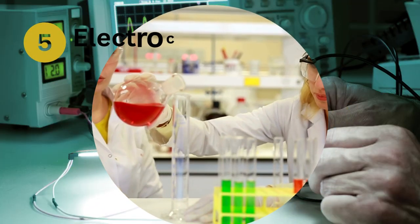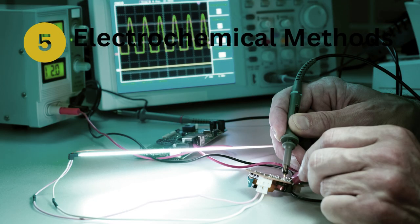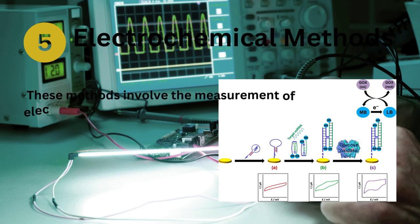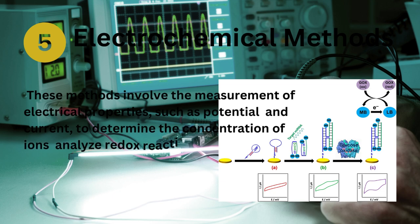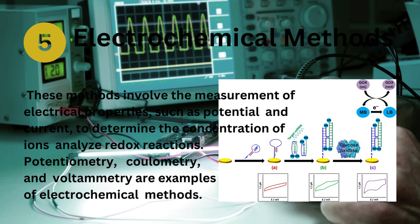Electrochemical methods: These methods involve the measurement of electrical properties, such as potential and current, to determine the concentration of ions and analyze redox reactions. Potentiometry, coulometry, and voltammetry are examples of electrochemical methods.